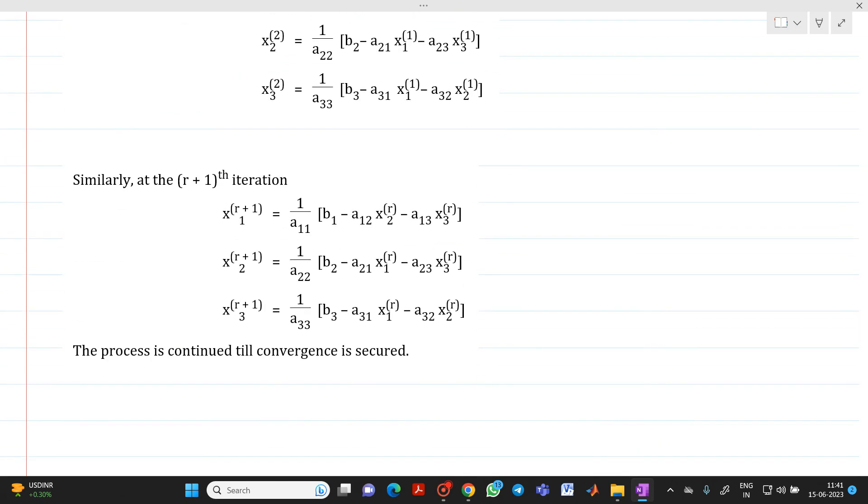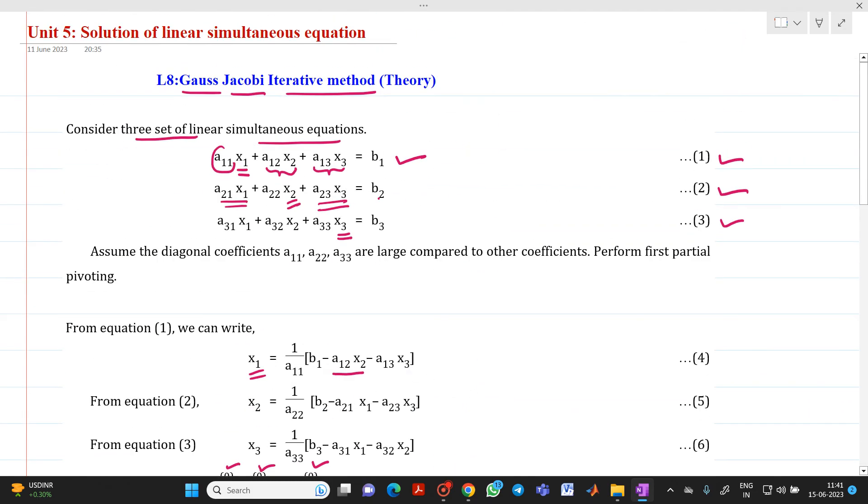If you want to write it as a general formula for the r plus 1th iteration or n plus 1th iteration, the formula will be like this. This is the derivation or explanation of the Gauss-Jacobi iterative method.